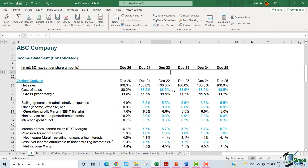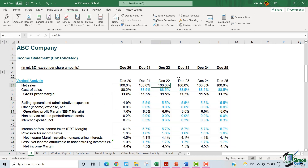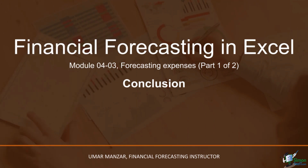We have now calculated the margins for all other lines using historical data. That concludes the current module. We discussed a critical financial analysis tool — the vertical analysis — and applied it to the income statement of ABC, going through all the line items. Join me in the next module as we continue with our income statement forecast for ABC.